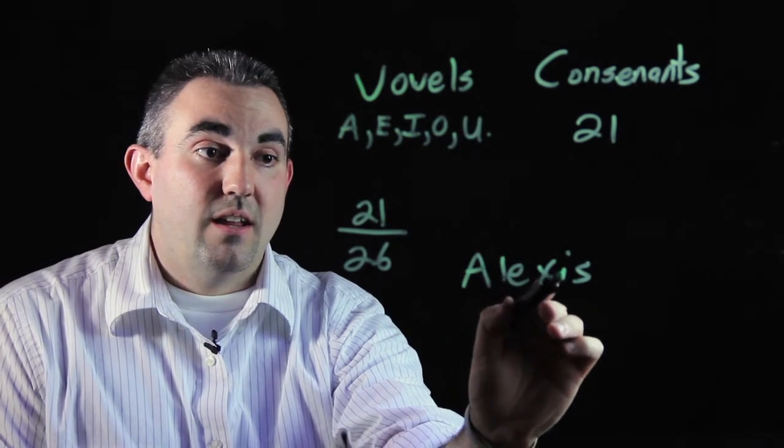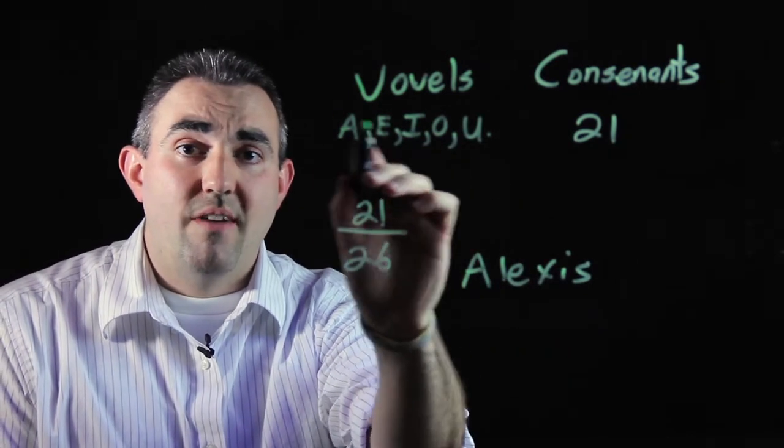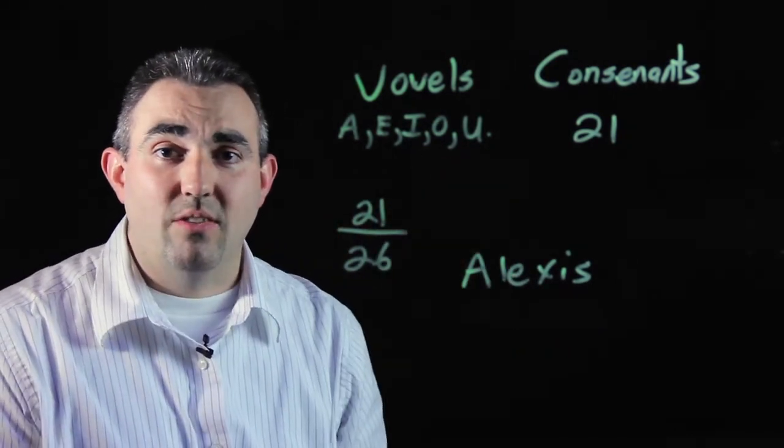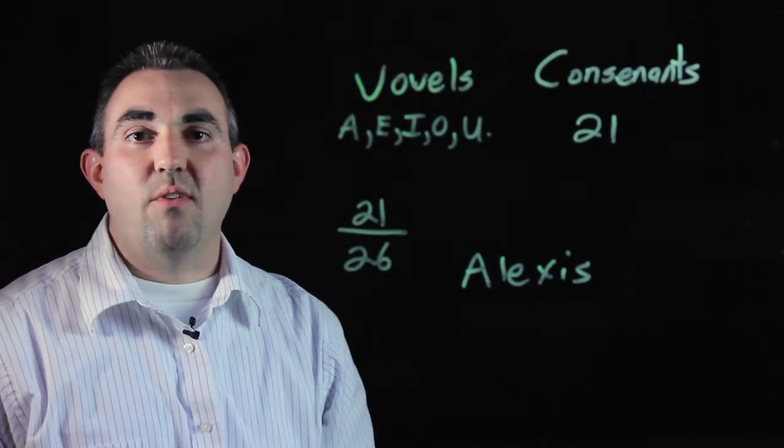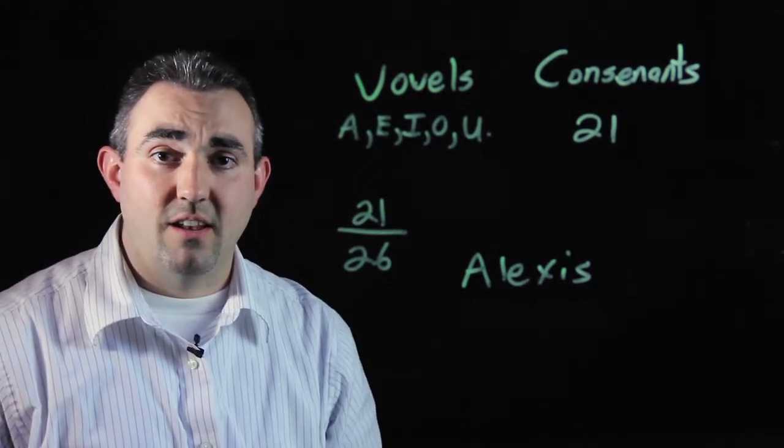Here's an A, here's an E, here's an I. Those are part of my vowel letters. So I don't want to count them when I'm discussing the consonants. So what is the fraction value of consonants in the name Alexis?